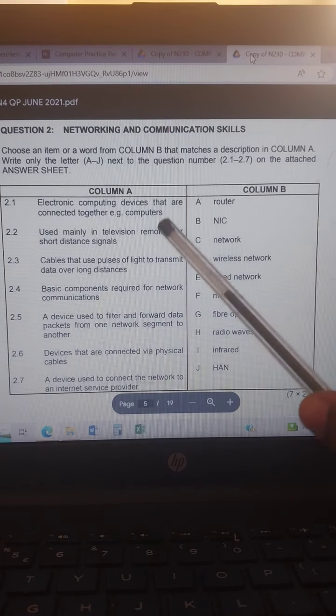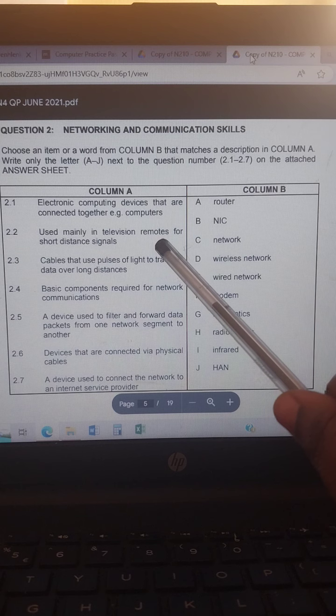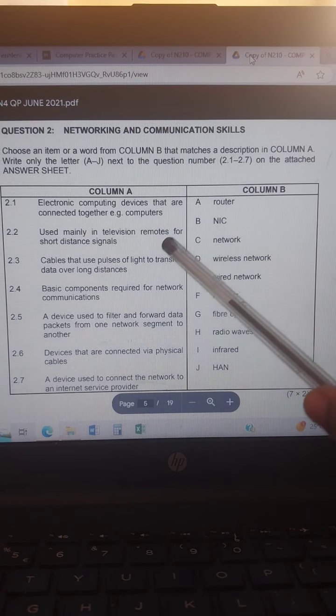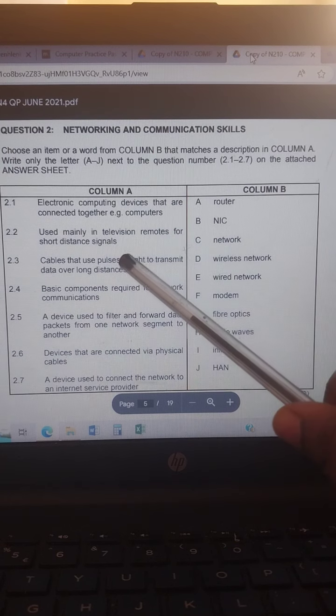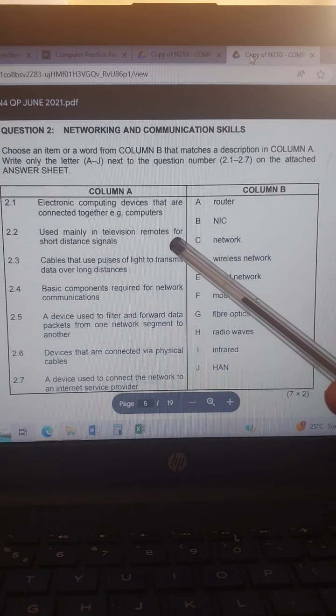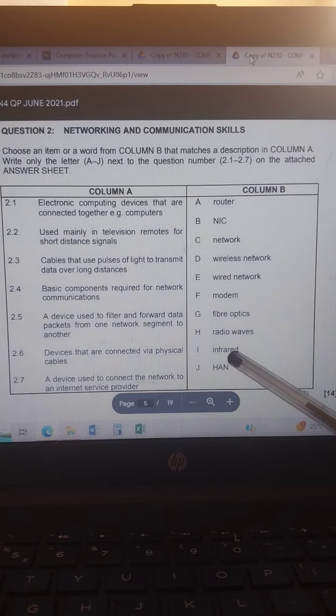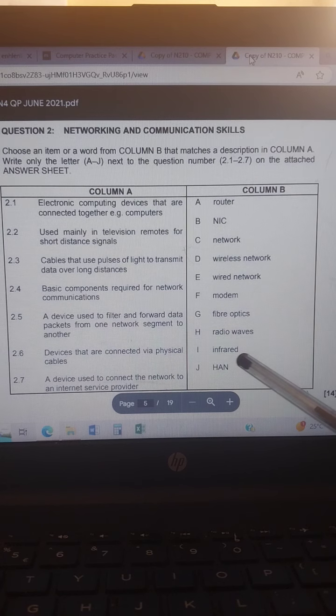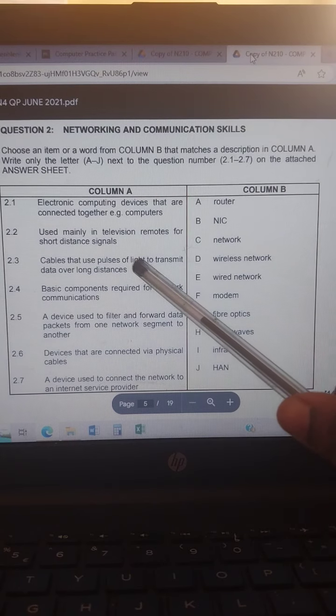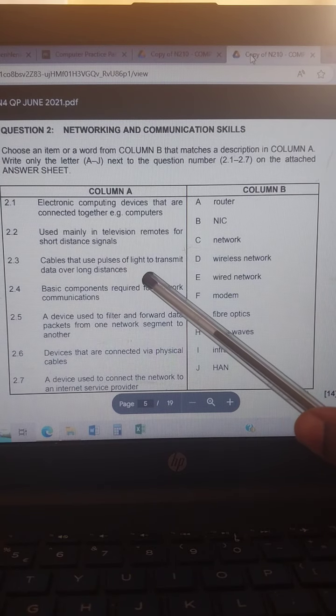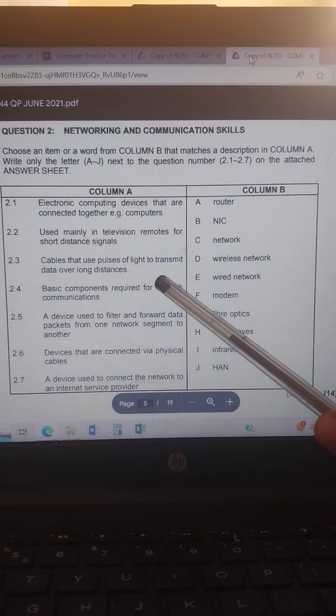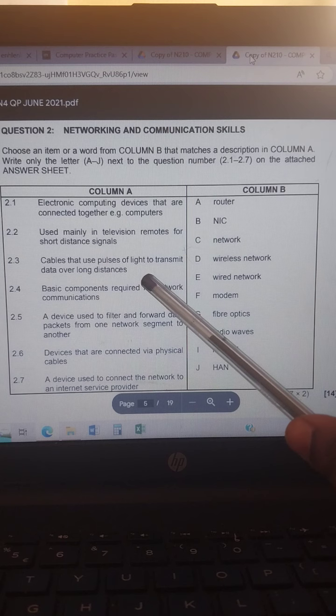Number two, used mainly in television remotes for short distance signals. The answer is H, infrared. Then number three, cables that use pulses of light to transmit data over a long distance. It's fiber optics.